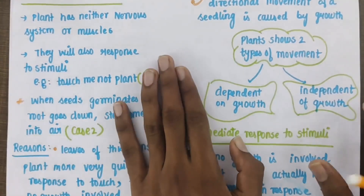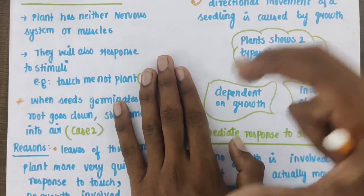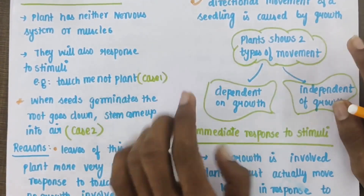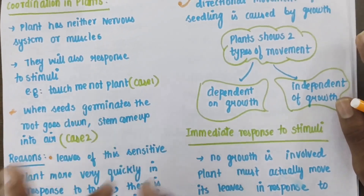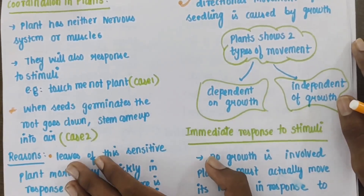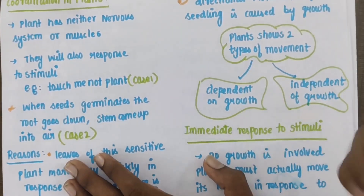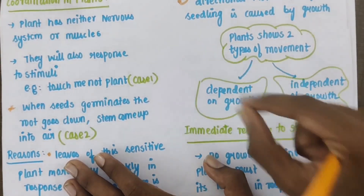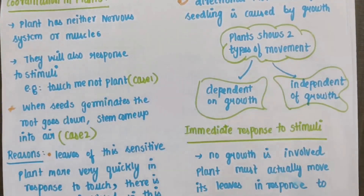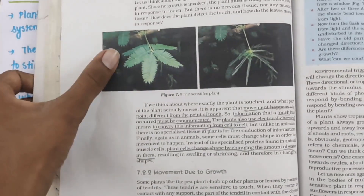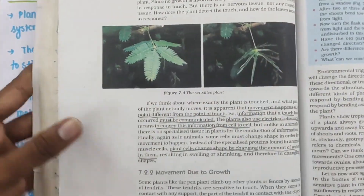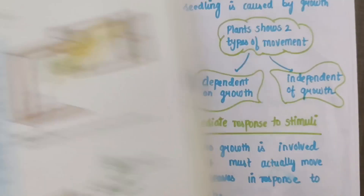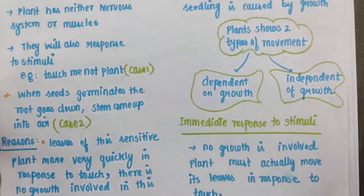A stimulus is anything that triggers a response. For example, if it is hot or cold, that is the stimuli — the singular form is stimulus. If you look at the touch-me-not plant, you can see this in your book. When it encounters the external environment, it gives a response — that is the response of the plant.